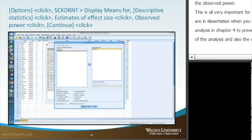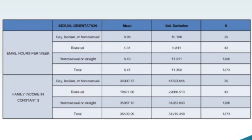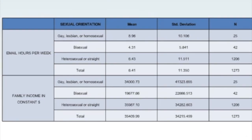We click Continue and then OK to run the output. SPSS produces many tables. The first is the descriptive statistics table, which shows three groups for sexual orientation: gay/lesbian/homosexual, bisexual, and heterosexual/straight. For email hours per week, the means are: gay/lesbian/homosexual = 8.96, bisexual = 4.31, and heterosexual/straight = 6.43, with a total mean of 6.41.